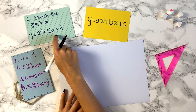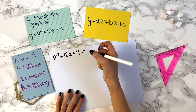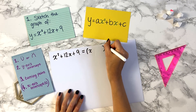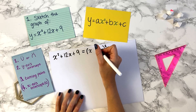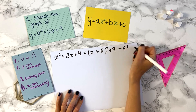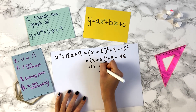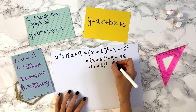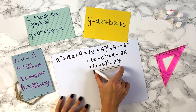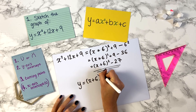Let's complete the square on x squared plus 12x plus 9. We write the bracket x plus half of 12 (which is 6), close bracket, squared. Then we keep the plus 9 and subtract 6 squared. That gives us x plus 6, all squared, plus 9 minus 36, which simplifies to x plus 6 all squared minus 27. So y equals x plus 6 all squared minus 27.